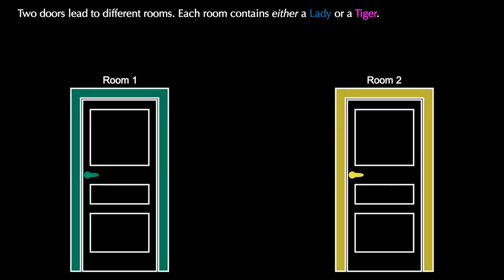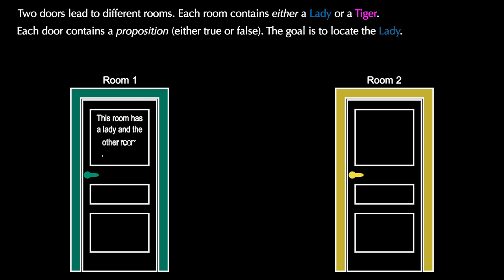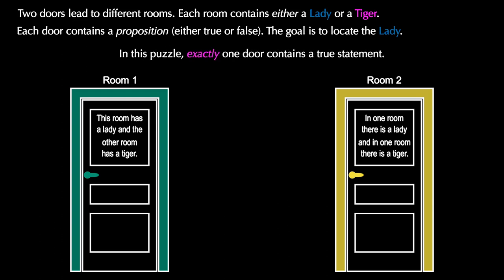Let's finish with another puzzle for you to think about. Remember we have two doors leading to two rooms and each room either has a lady or a tiger. Each door contains a proposition and the goal is to locate the lady. Room one says this room has a lady and the other room has a tiger while room two says in one room there is a lady and in one room there is a tiger. But in this puzzle exactly one door contains a true statement. So which doors should you open?